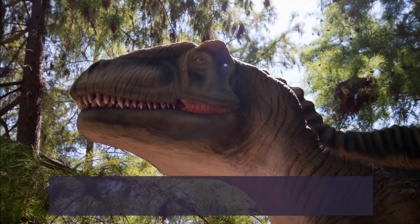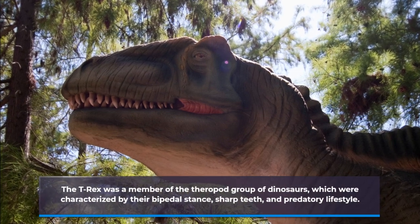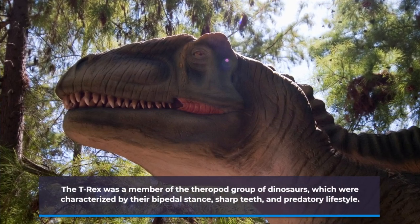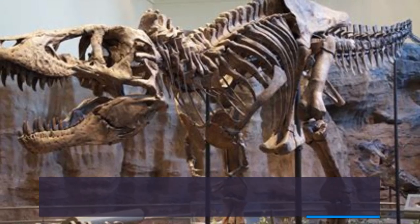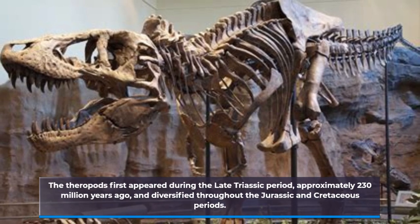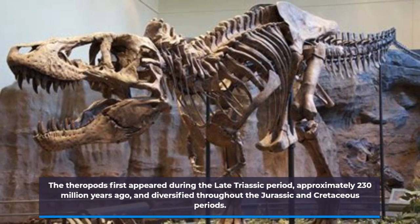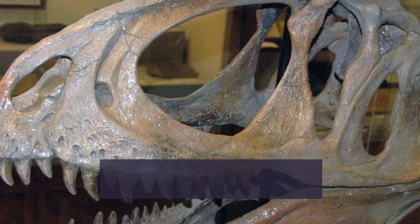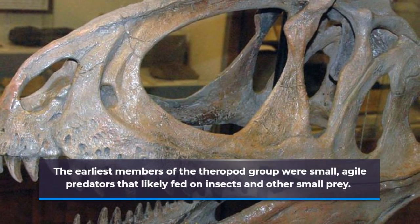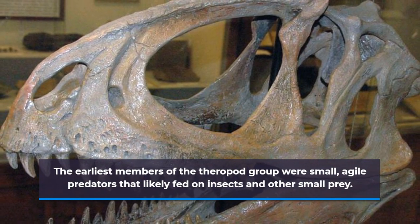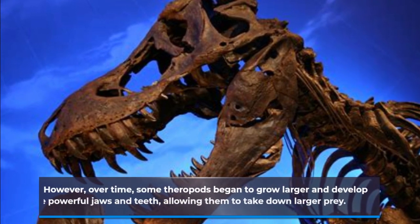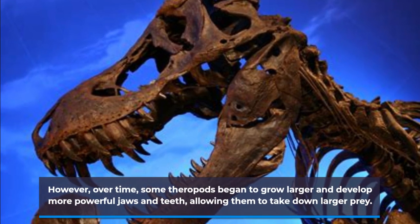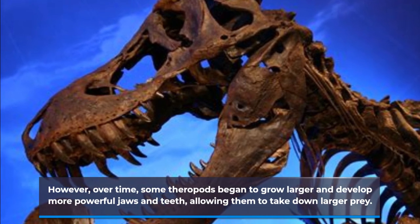The T-Rex was a member of the theropod group of dinosaurs, which were characterized by their bipedal stance, sharp teeth, and predatory lifestyle. The theropods first appeared during the late Triassic period, approximately 230 million years ago, and diversified throughout the Jurassic and Cretaceous periods. The earliest members of the theropod group were small, agile predators that likely fed on insects and other small prey. However, over time, some theropods began to grow larger and develop more powerful jaws and teeth, allowing them to take down larger prey.